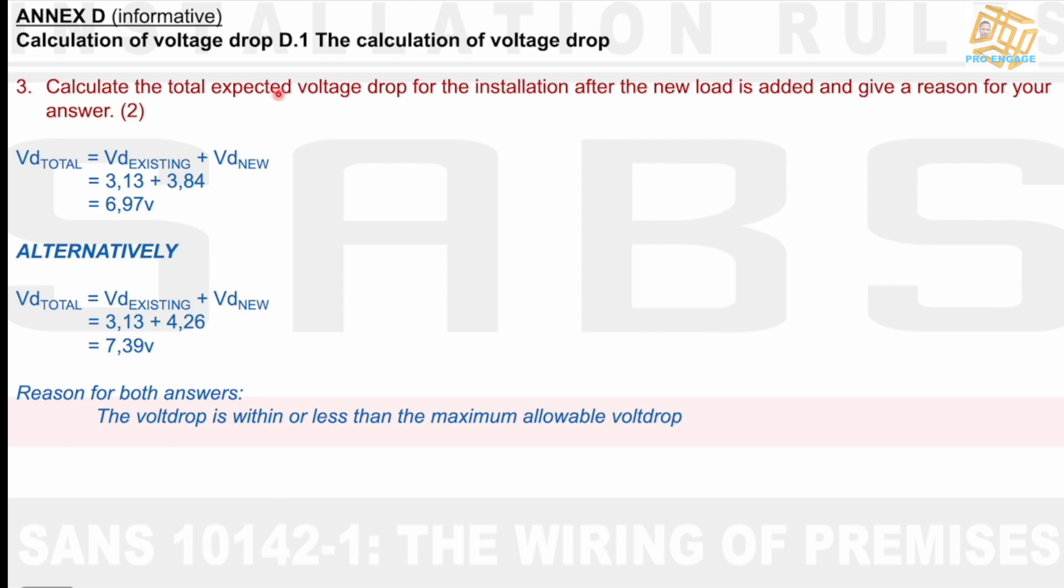Then, according to question 3, calculate the total expected voltage drop for the installation after the new load is added, and give a reason for your answer. I say VD total with both loads. I then say VD total equals VD existing plus VD new, so I take the two voltage drops, add it. Alternatively, it can also look like this, because we use two formulas, and VD existing, then plus VD 4.26, and it still comes to 7.39. Both these answers, the reason for both answers, the voltage drop is within or less than the maximum allowable voltage drop.